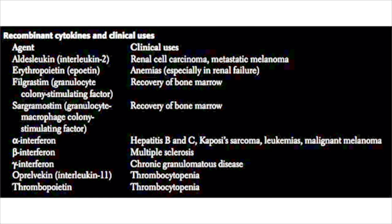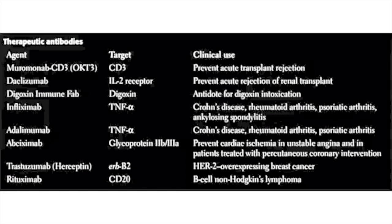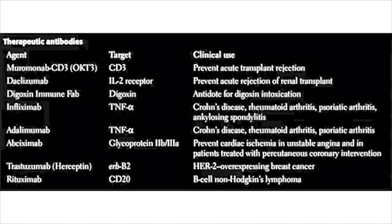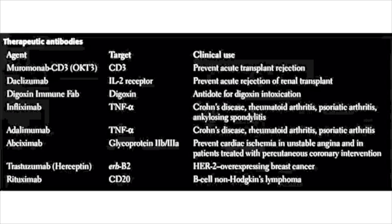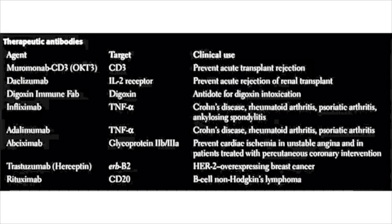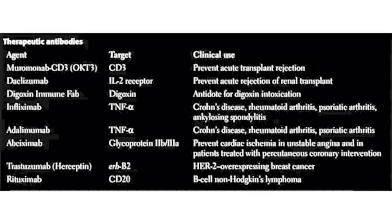A similar purpose can be served by administering thrombopoietin. To wrap up, we will discuss therapeutic antibodies used in organ transplant and autoimmune disease settings. Muromonab (OKT3) is an anti-CD3 antibody used to prevent or treat acute transplant rejection. Daclizumab is an anti-IL-2 receptor antibody used to prevent acute rejection of renal transplant.